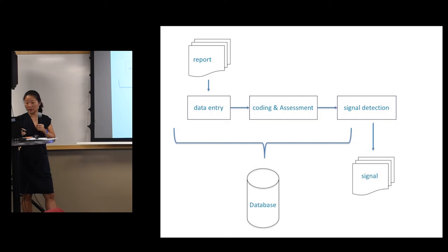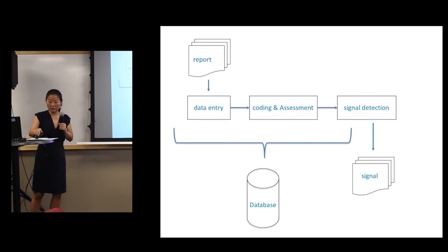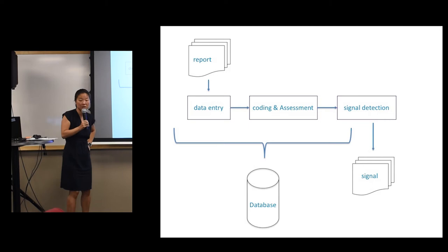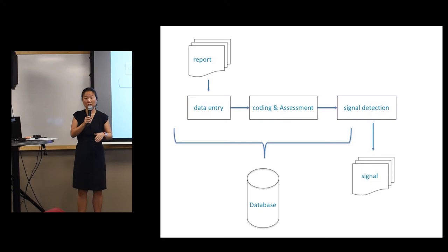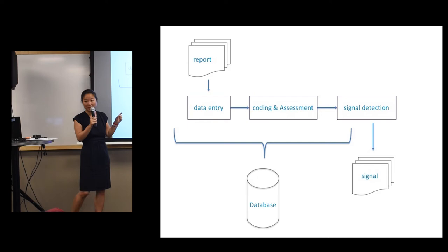This voluntary submission is something to think about, because the system only works if people are willing to submit their reports — they have to know that such a system exists and they have to take action to submit a report. It sounds like a very simple system, but the challenge is to get engagement from the people you want information from. Reports can arrive in many different ways — sometimes still paper-based, sometimes via reporting forms that enter directly into your database.